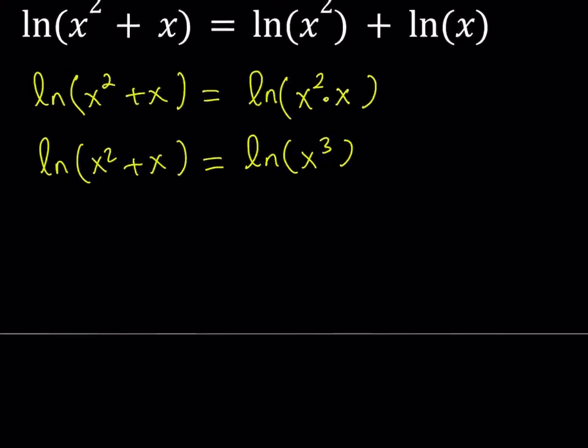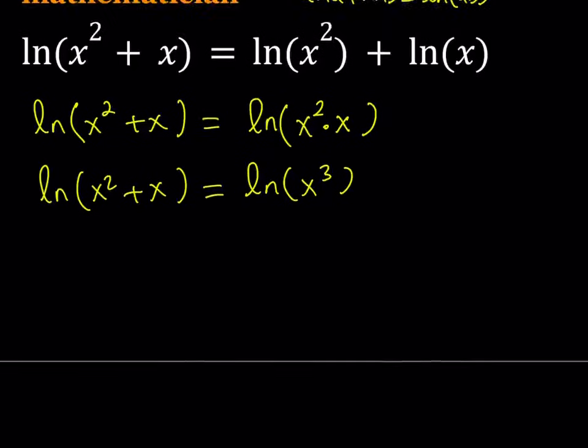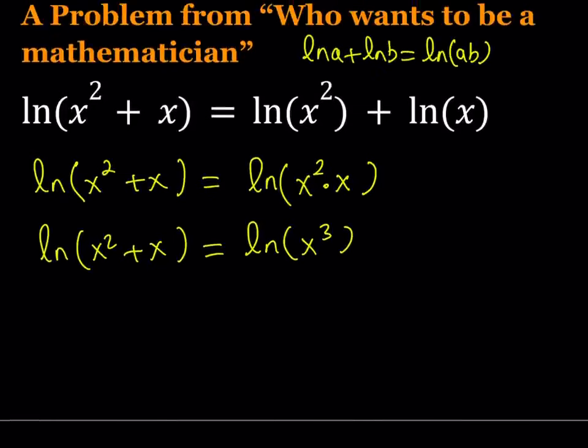Obviously, one thing that we didn't check, and we should have checked that, is the domain of this function. Since we have ln(x), it is defined only for positive x values. So x needs to be positive. And since this equation must be satisfied on both sides, then the left hand side also has to satisfy. But if x is positive, x² + x is definitely positive. So we only need x > 0 as our condition.